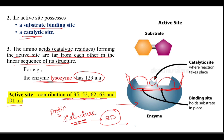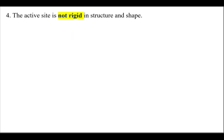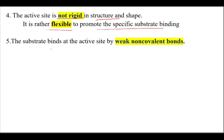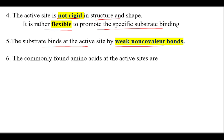The amino acids which are linearly arranged do not form the active site; rather, it is the amino acids arranged in 3D that contribute to it. The active site is not rigid in structure and shape — it is flexible to promote specific substrate binding. The substrate binds at the active site by weak non-covalent bonds.